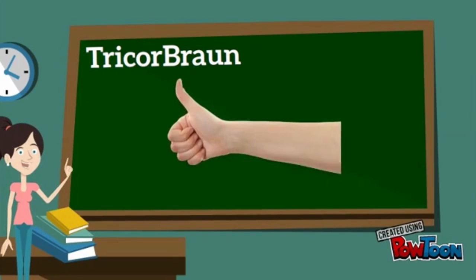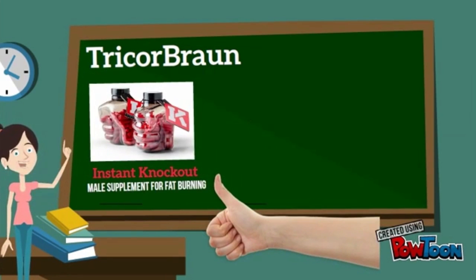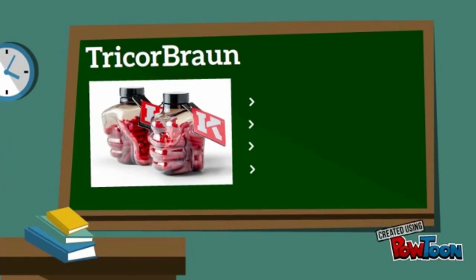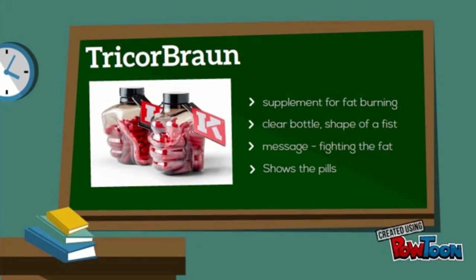Some examples of innovations include instant knockout and in-wall desiccant technologies. The instant knockout is created for a company who sells male supplements for fat burning. Through the clear plastic bottle molded into a fist, Trichobron is able to make a packaging solution that expresses the message of fighting fat and shows off the bright red pills.